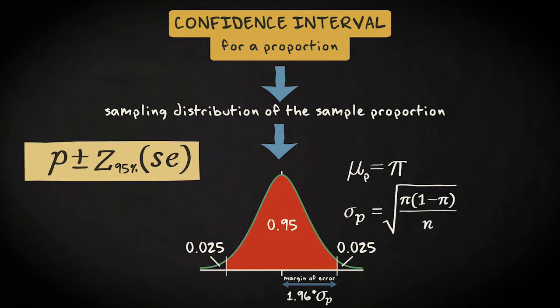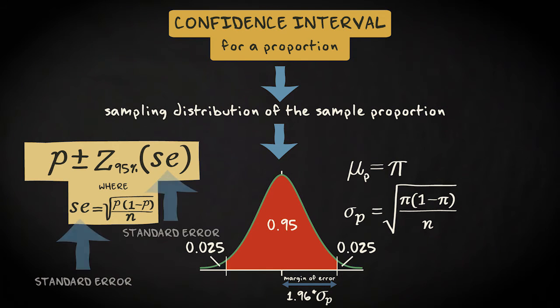This leads to the following formula: p plus and minus the z-score for the 95% confidence level times the estimated standard deviation of the sampling distribution of the sample proportion. Just like when we construct a confidence interval for a mean, we call this estimated standard deviation of the sampling distribution the standard error.